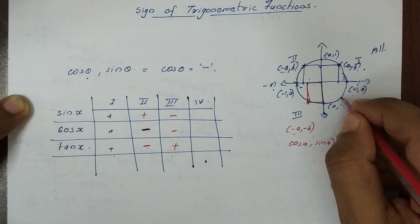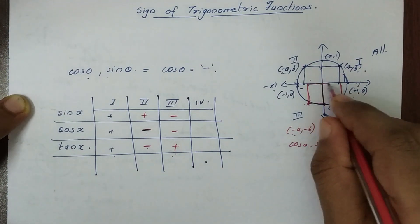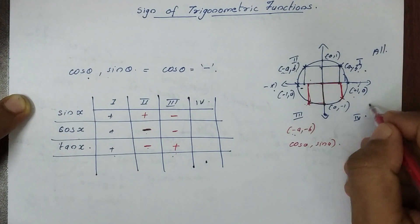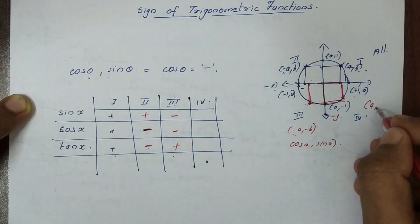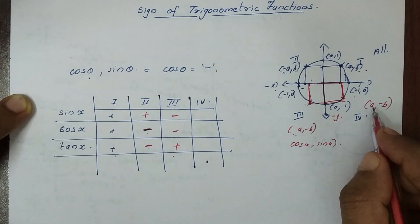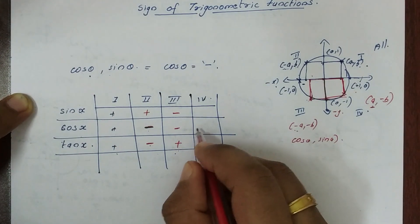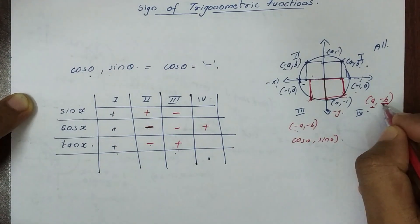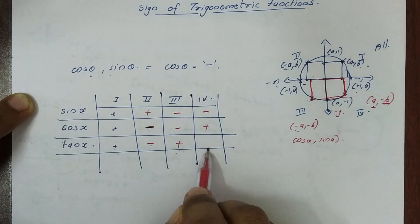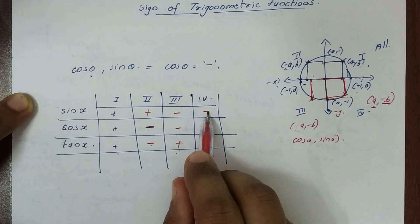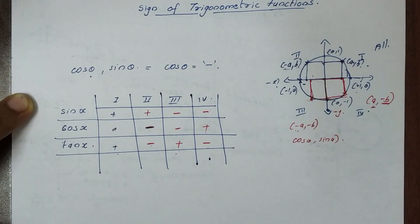Now let's do the fourth quadrant. We have a point: the x distance is a, which is positive, and the y is minus b. The corresponding coordinates give cos theta as positive and sin theta as negative. Then tan theta equals sin theta divided by cos theta, so this is negative.